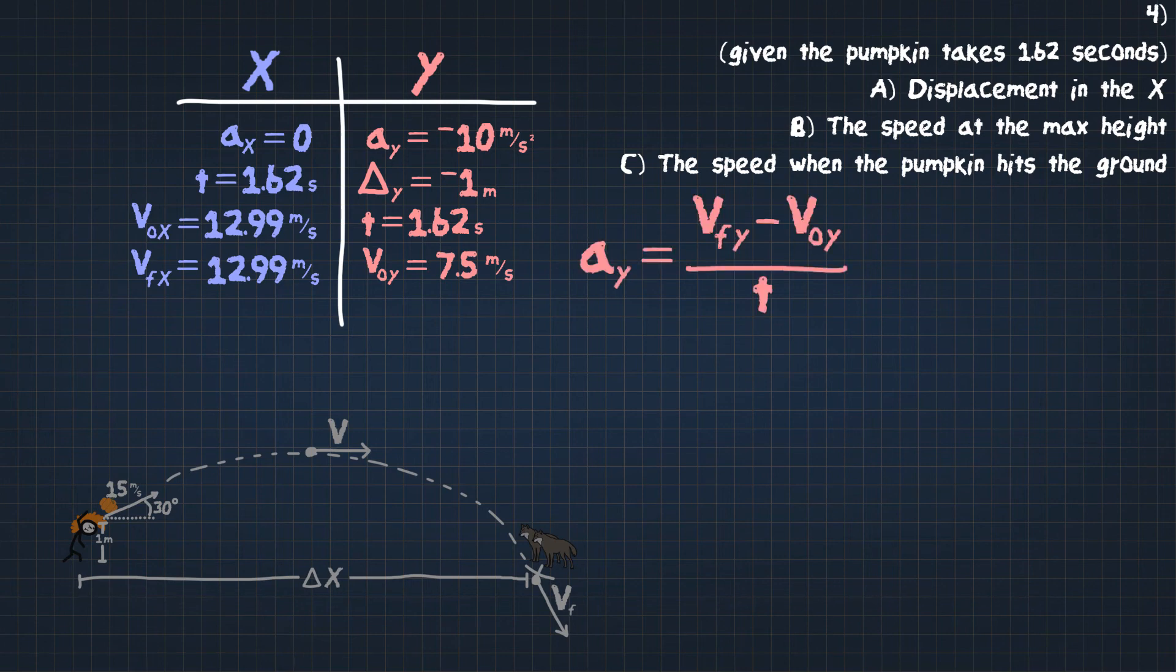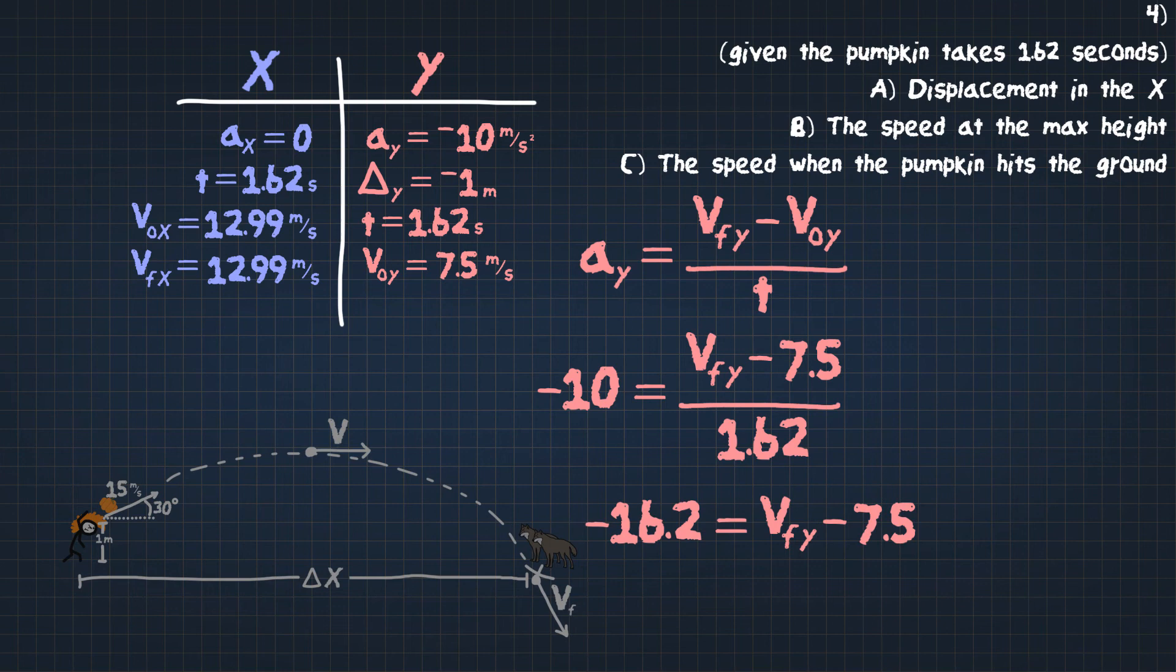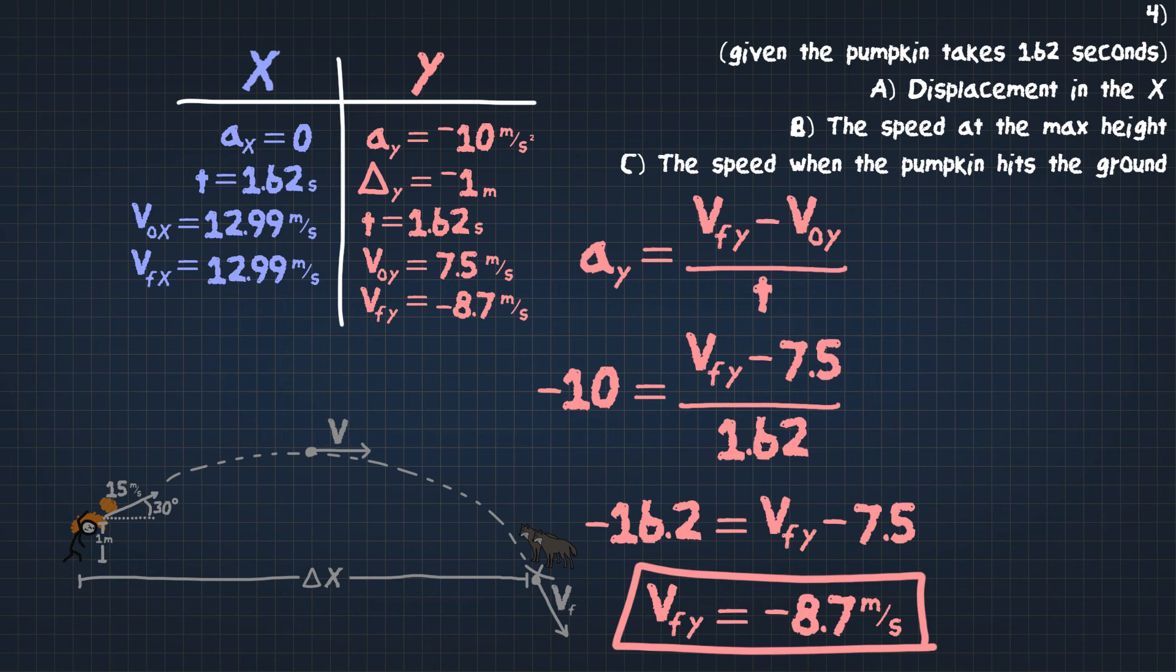We have acceleration equals v final y minus v initial y over t. Acceleration is negative 10, v final is what we're looking for, v initial is 7.5, and the time is 1.62. Put this over to the other side. Negative 16.2 is equal to v final y minus 7.5. And we get v final y as negative 8.7 meters per second. So we found what the final velocity in the y is. It's 8.7 meters per second, negative.